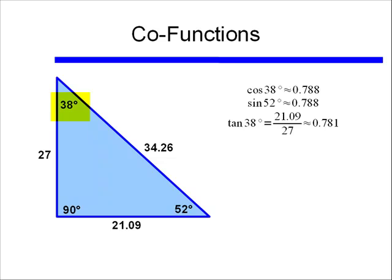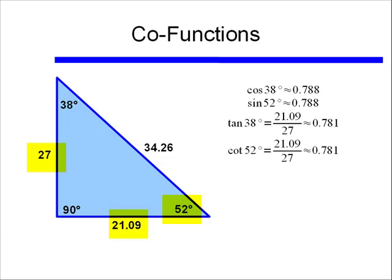If we look at the tangent of 38 degrees, tangent equals the opposite over the adjacent, or 21.09 divided by 27, approximately 0.781. And if we look at the cotangent of 52 degrees, we find that is also equal to 21.09 divided by 27. So tangent of 38 degrees equals the cotangent of 52 degrees.